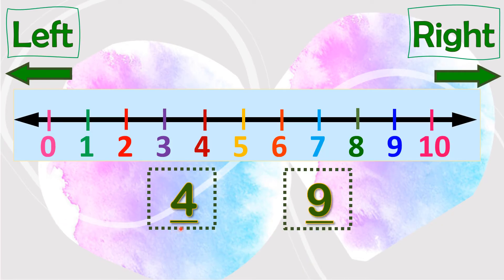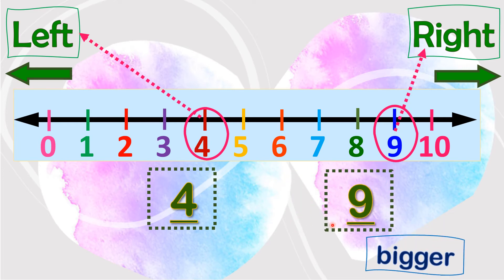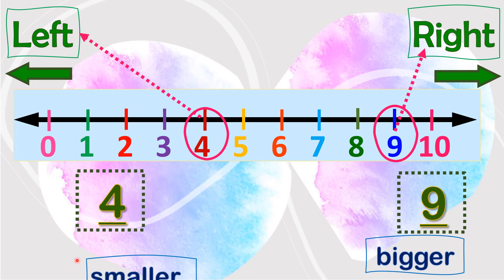Let's take 4 and 9 as an example. We circle 4 and 9. 4 is at the left side and 9 is at the right side. We say that numbers at the right side are bigger. Since 9 is at the right side, 9 is bigger. 4 is at the left side, so 4 is smaller.